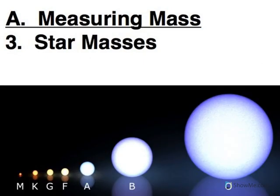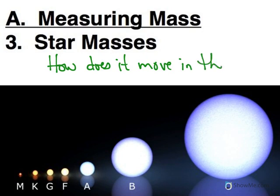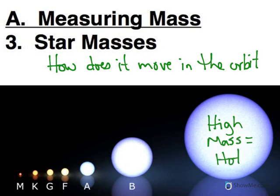So when we look at our masses, what we're going to look at is how does it move in that orbit. And the picture here shows that our O stars have a high mass. So high mass is going to equal being hot. And our M stars have a low mass. So low mass is going to be equal to being cool. So we're going to see all sorts of connections with mass and various characteristics.